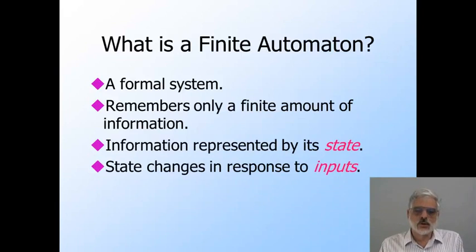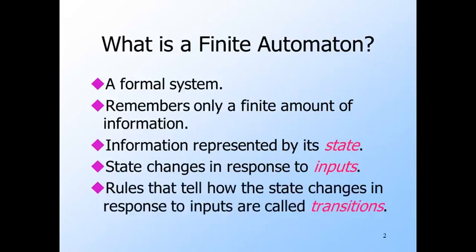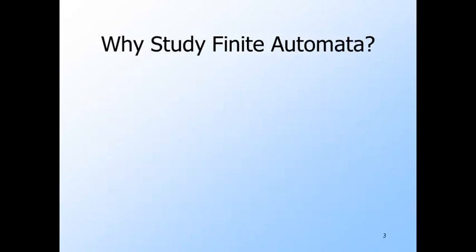Inputs are either characters, if we're doing something like processing text, or events, if we are modeling something like a communication protocol. The rules that give the new state for each current state and input are called the transitions. The finite automaton is useful in a number of computing applications.